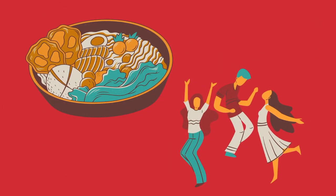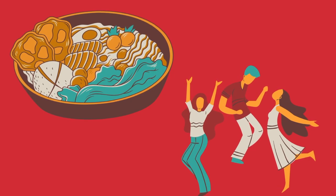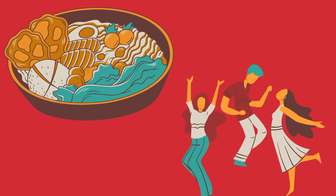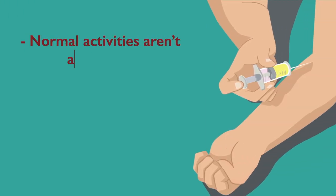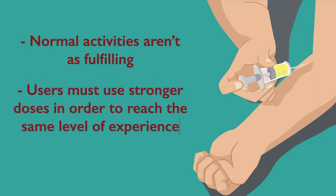As a result, normal pleasurable activities that would have previously activated the reward pathway, such as eating or socializing, are no longer able to produce the same level of pleasure. This leads the individual to seek out the drug to achieve the same level of pleasure and reinforces drug-seeking behavior.